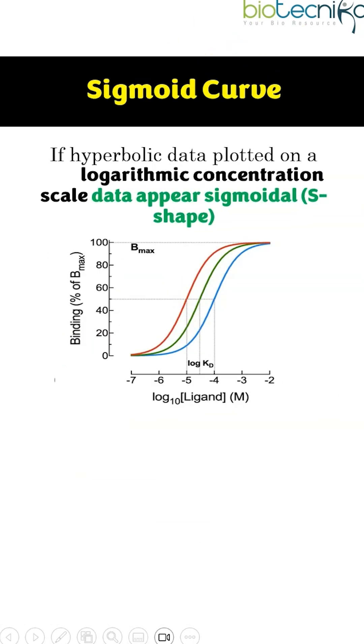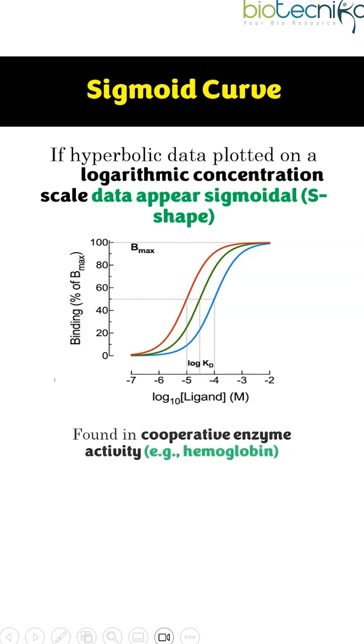Sigmoid Curve. If hyperbolic data is plotted on a logarithmic concentration scale, then the data appears sigmoidal, which is the characteristic S-shape.